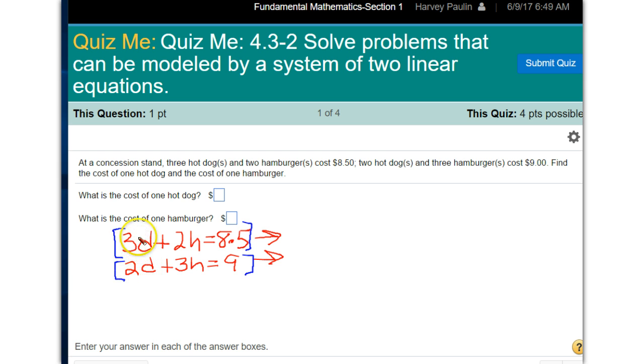Well, if we want to get rid of the d's, we could multiply this by 2. That would make this a 6d. And then if we multiply this by a negative 3, that would make this a negative 6d. And I'll show you. So then multiplying through...